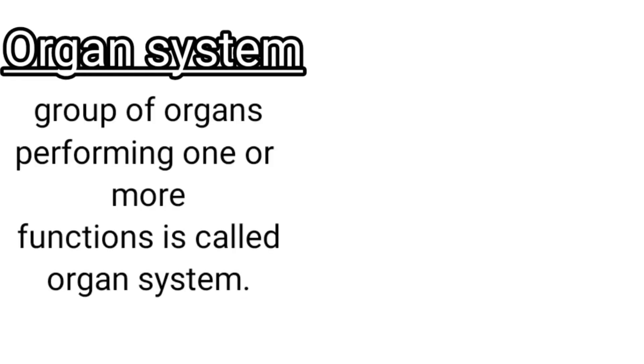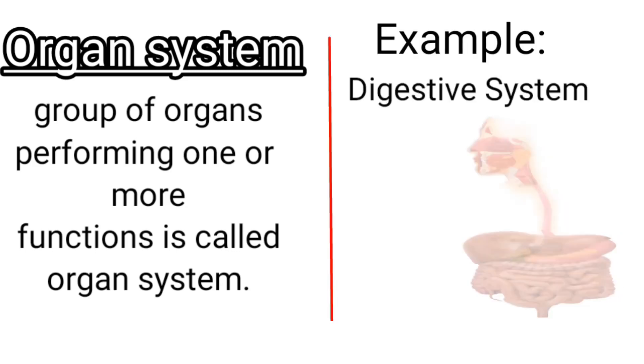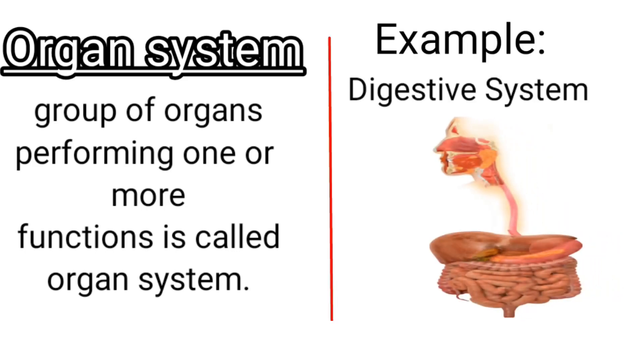Organ system: a group of organs performing one or more functions is called an organ system. Example: digestive system.